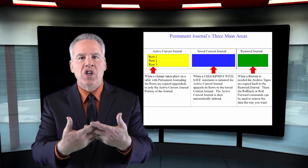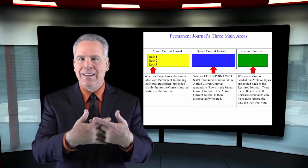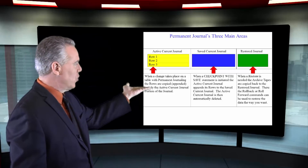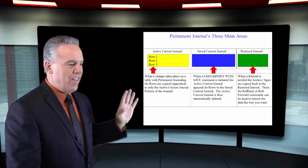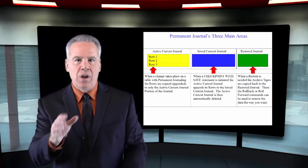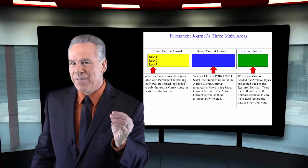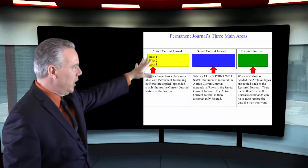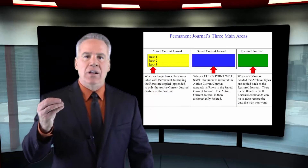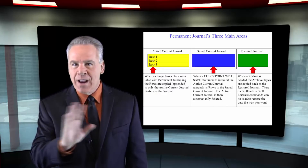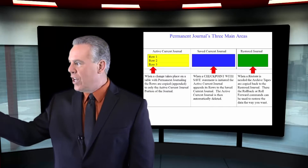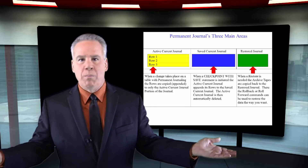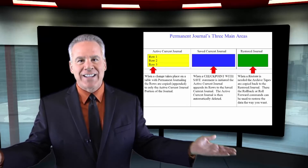Every time a row is changed, inserted, updated, or deleted, it will be copied to the journal in the active current journal area, row by row. Then, usually at the end of the day or at any time, when the DBA says I want to checkpoint with save, it's going to copy that over to the saved current journal and then delete that active yellow area. They can then copy this to any tapes. Any time they need to do any restores, they're going to take those tapes, copy it to the restored journal, and there they'll do a roll forward or roll back to any point in time. That's how things are done.